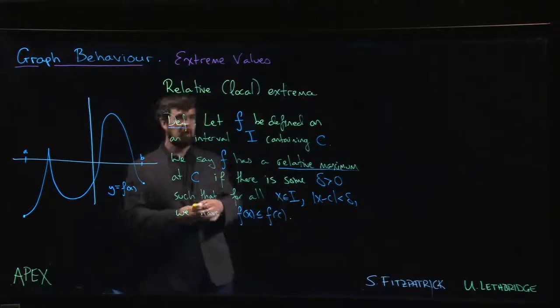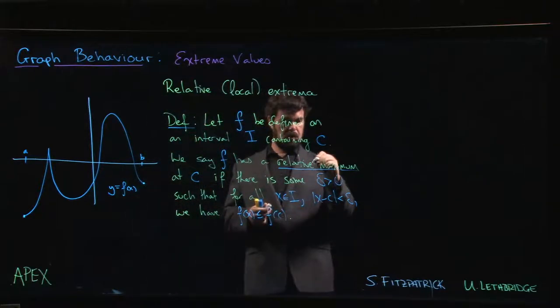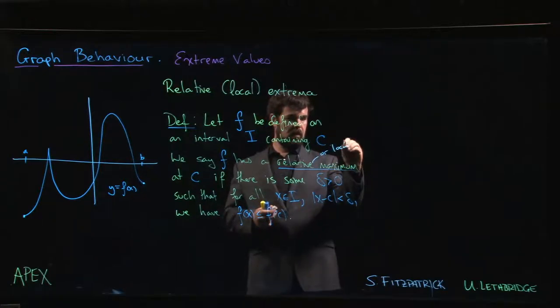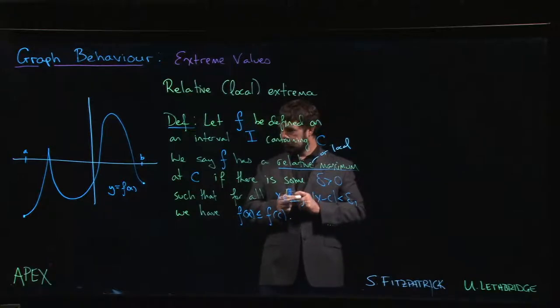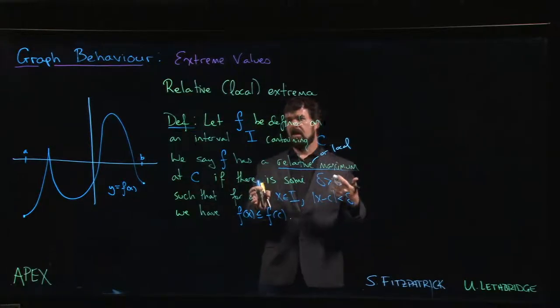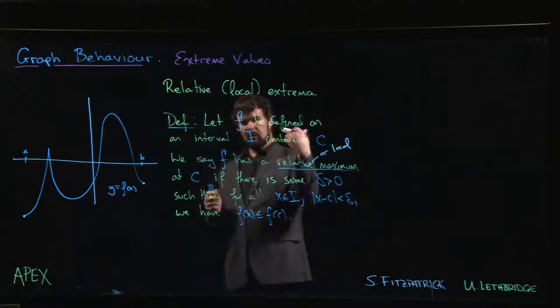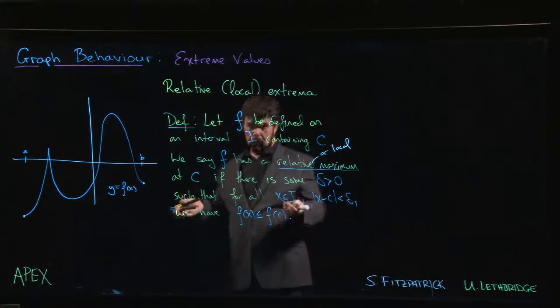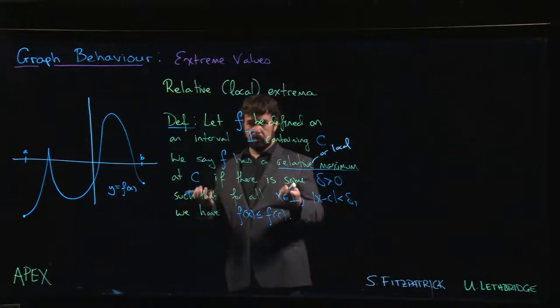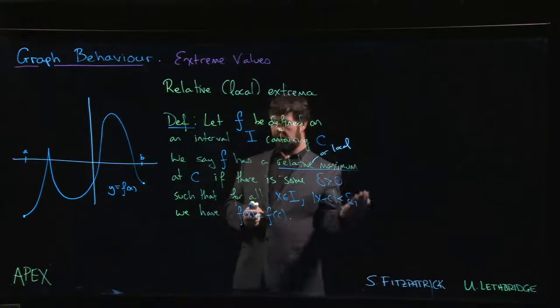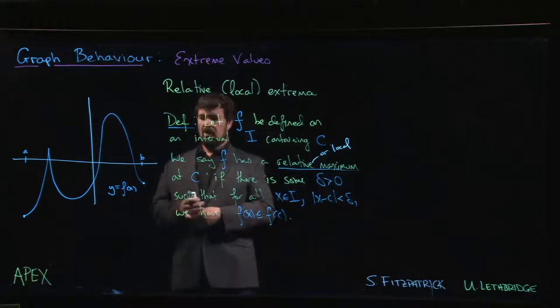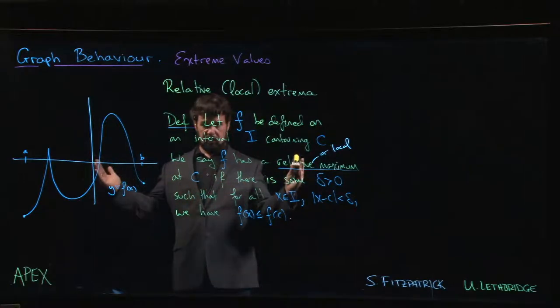max or min. Local is another term that might get used. Now the definition looks quite technical, but it's actually fairly straightforward. What it's saying is we've got a function defined on some interval, possibly a closed interval, and it contains some number c. So c is an x value in the interval. What does it mean to say that your function has a relative maximum at that point c? Well, when we say relative maximum, we don't necessarily want to say that it's the absolute max.